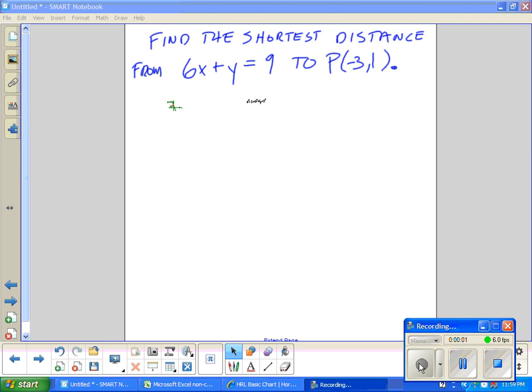Find the shortest distance from the line 6x plus y equals 9 to point (3, -1). Or negative 3, 1.